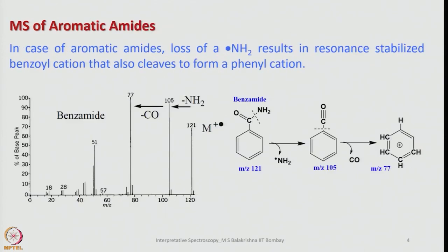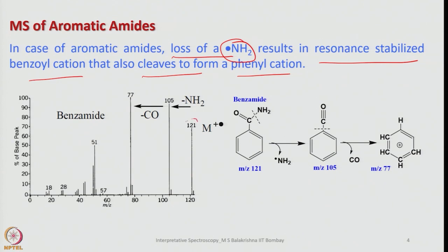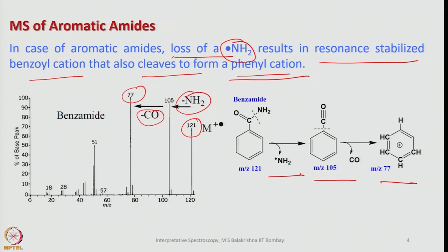Let's look into mass spectra of aromatic amides. In the case of aromatic amides, loss of the NH₂ radical results in a resonance-stabilized benzoyl cation that eventually cleaves to form a phenyl cation. For example, this is the base peak for benzamide: NH₂ comes out and then CO also comes out, giving m/z = 77 for the phenyl cation. This shows the steps involved in the fragmentation of benzamide.